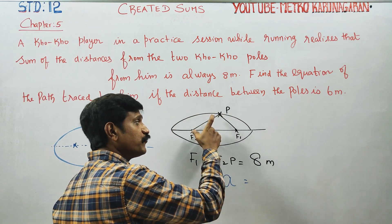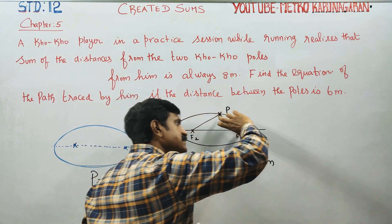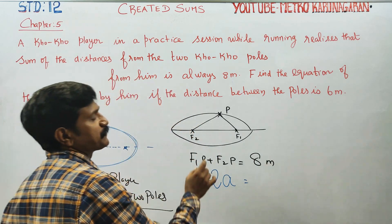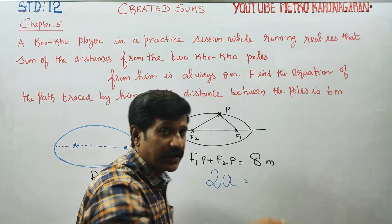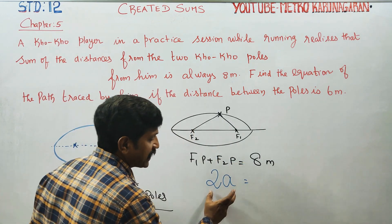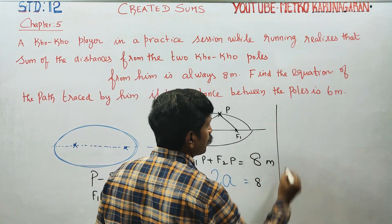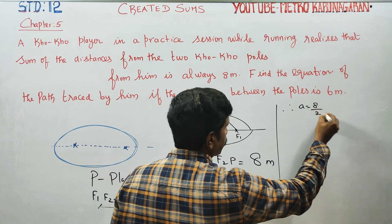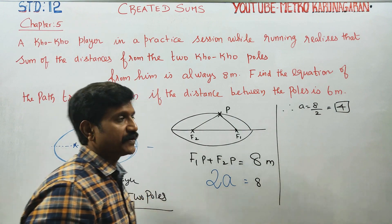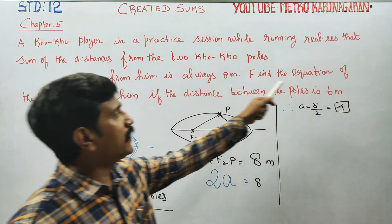The sum of the focal distances from any point on the ellipse — add them and you get the major axis length. The length of the major axis 2A is equal to 8, therefore A is equal to 8 by 2, which gives A equal to 4. A is ready.